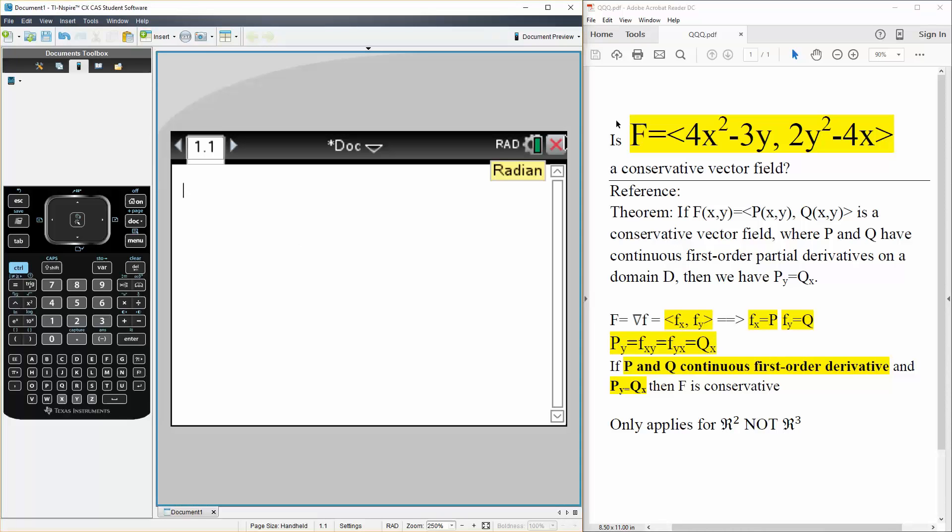Our P term would be this, and our Q term would be this. So we'll say P is defined as we have 4x squared minus 3y,